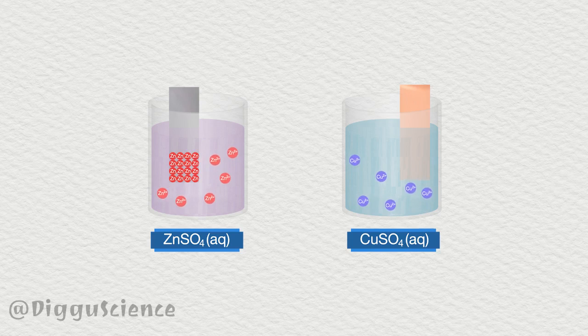This zinc sheet is composed of zinc atoms. Meanwhile, copper sheets are composed of copper atoms.